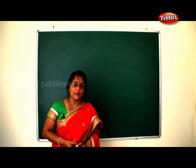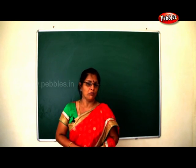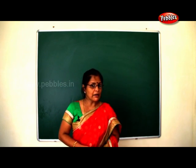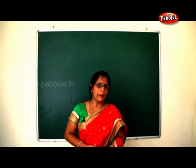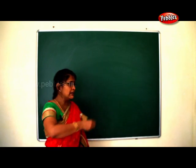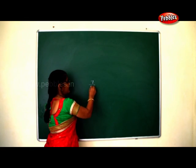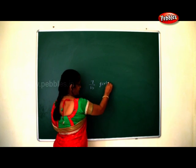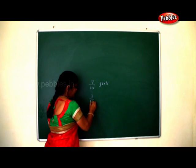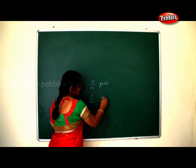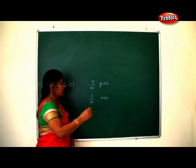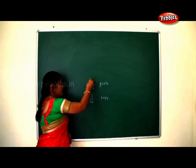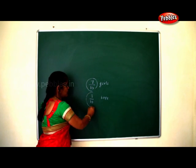There were seven girls and three boys in the orphanage. Gautam cut the cake into ten equal parts. The girls got seven by ten of the cake, and the boys got three by ten of the cake.